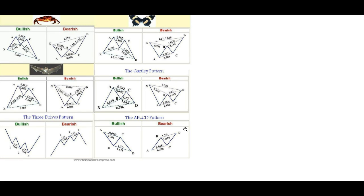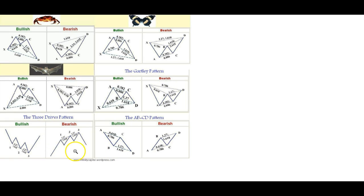Whenever you pull up a harmonic sheet, at the bottom you usually see two patterns: the three drives and the ABCD. The ABCD is just the first two drives of the three drives, so you can think of it like that and simplify it for yourself.